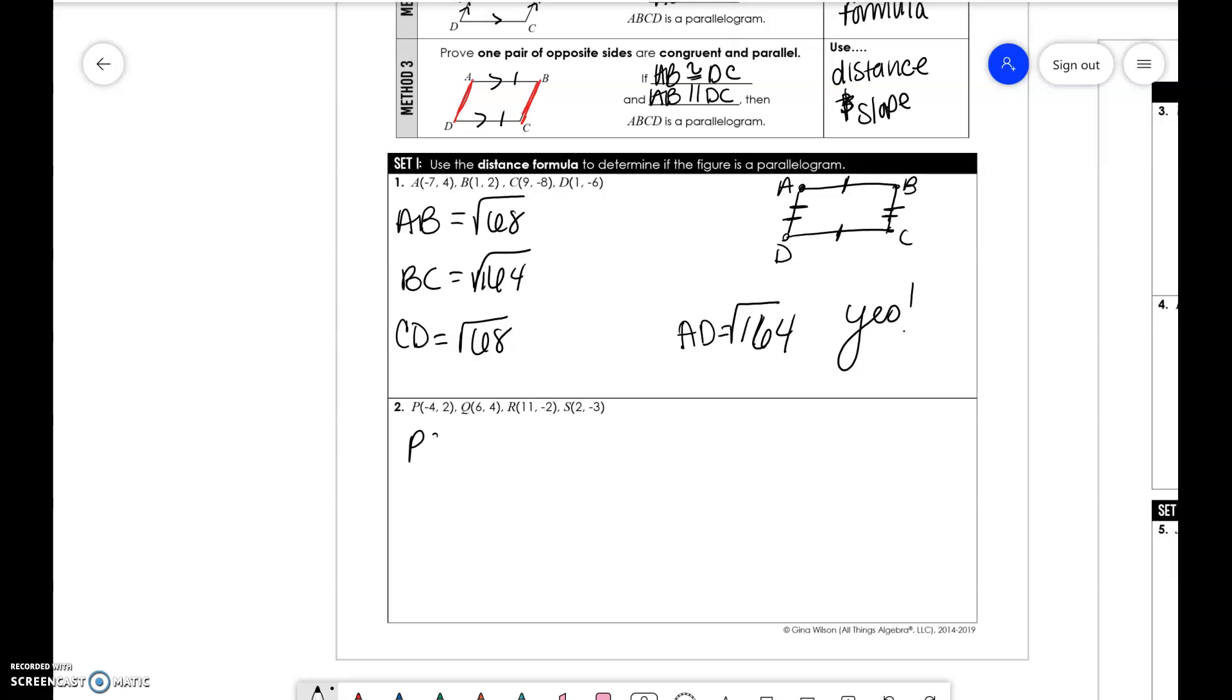We need to find PQ, QR, RS, and PS. So you have 104, 61, 82, and 61. Right here, these two are not the same. So it is not a parallelogram.